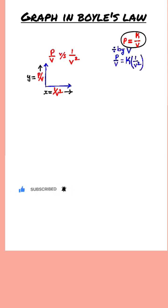And here, instead of P by V, can I write y? Because P by V is plotted on the y-axis. And instead of 1 by V square, can I write x? Because on the x-axis I have plotted 1 by V square. And instead of K, can I write m?